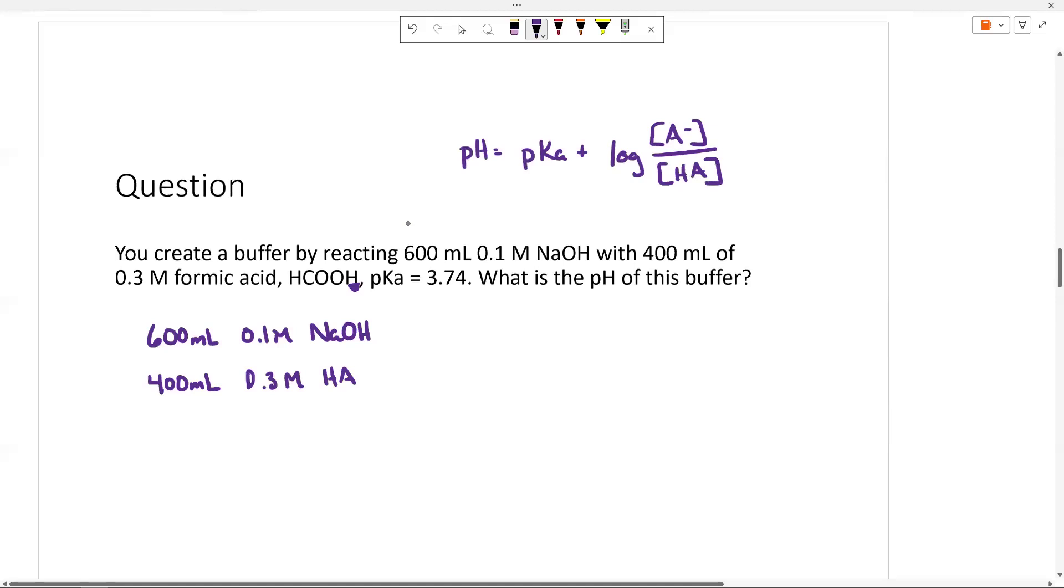So to know the pH of the buffer, I'm going to have to figure out how much of each of those I have. I was given the pKa. All right, y'all remember our ICE table. So if I thought about this reaction, I start with only the weak acid, but I'm going to neutralize some of it. So let's write that equation.